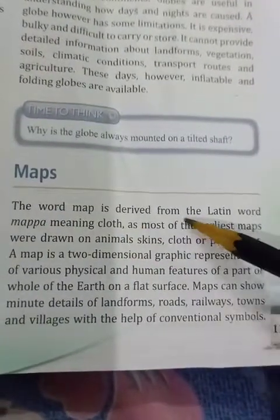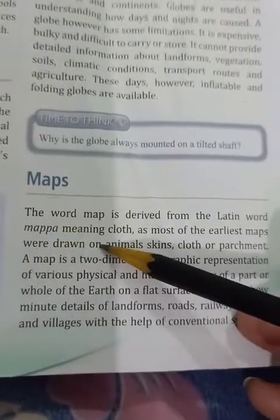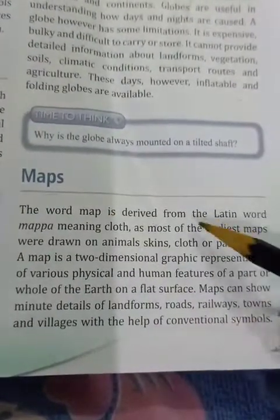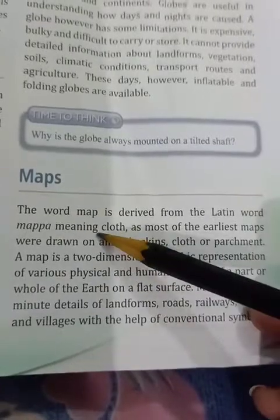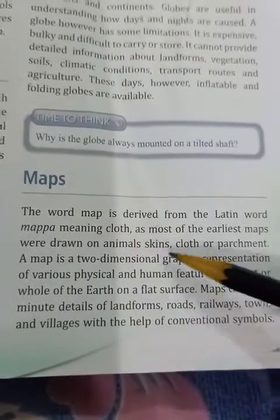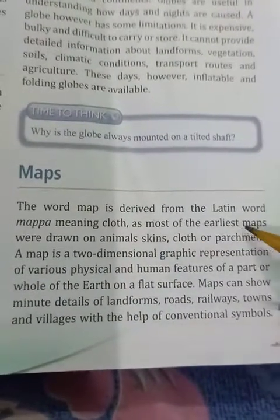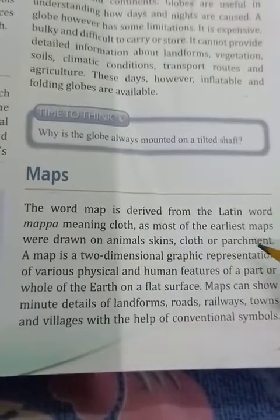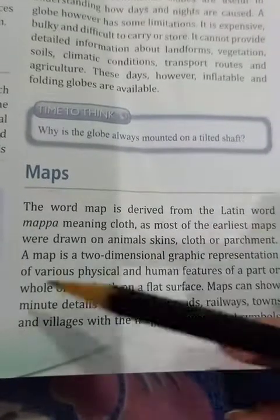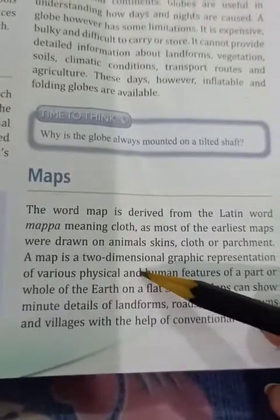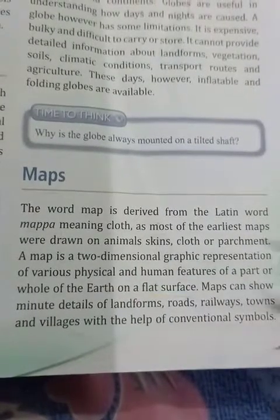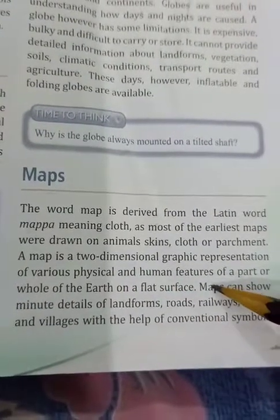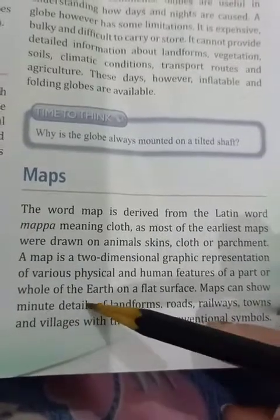The word map is derived from the Latin word mappa, meaning cloth. Most of the earliest maps were drawn on animal skin, clothes, or parchment.